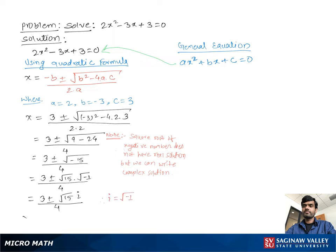Then, we get x equal to 3 plus square root of 15 i, over 4, or x equal to 3 minus square root of 15 i, over 4. And these are the two solutions of the given equation.